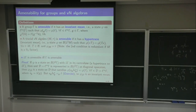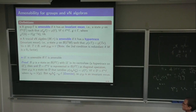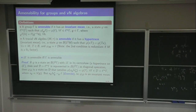Now, a finite von Neumann algebra is amenable — the terminology was coined by Connes. The analog of an invariant mean: a finite von Neumann algebra M is amenable if it has a hypertrace, which is a state on B(L²(M)) such that M (viewed as λ(M), left multiplication) is in its centralizer — meaning Φ(XT) = Φ(TX) for any X in M and T in B(H). We also want Φ restricted to M to equal the trace τ.